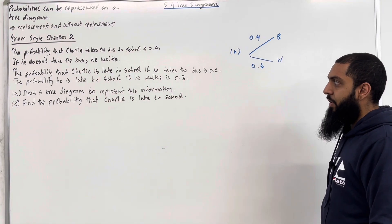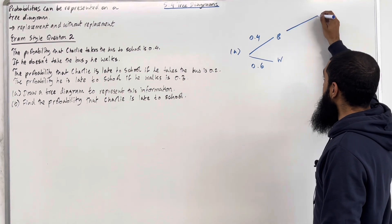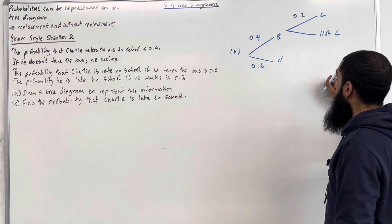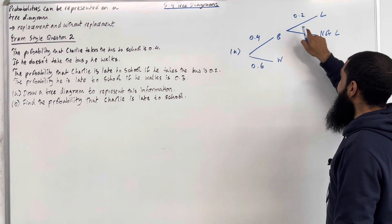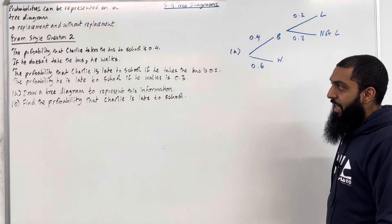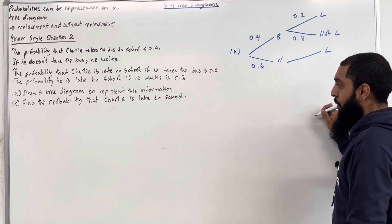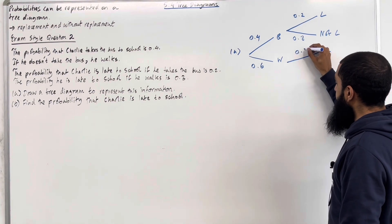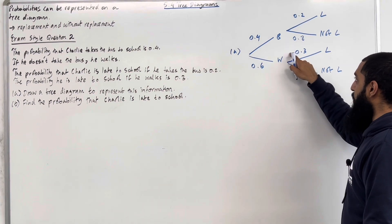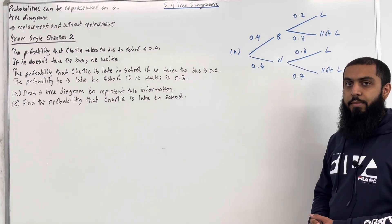The probability that Charlie is late to school if he takes the bus is 0.2, so given that Charlie takes the bus, the probability that he is late is 0.2, and the probability that he is not late is 1 − 0.2 = 0.8. Given that Charlie walks, the probability that he is late to school is 0.3, and the probability that he is not late is 1 − 0.3 = 0.7. This completes Part A of exam style question 2.